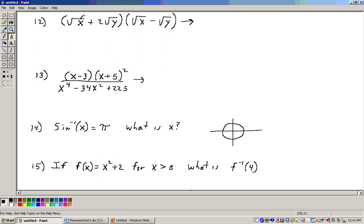The square root of x times the square root of x is the square root of x squared, which is x. Here we have the square root of x times a minus square root of y, which is minus square root of xy.